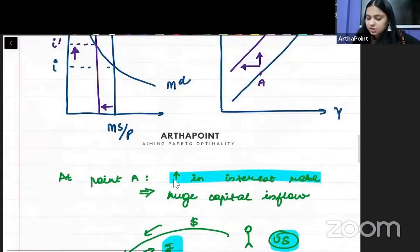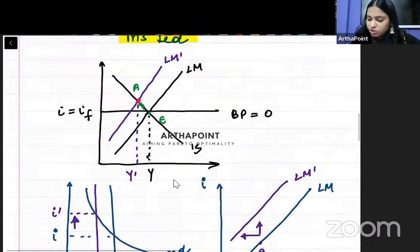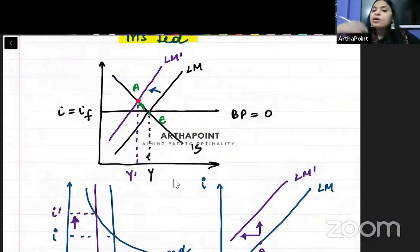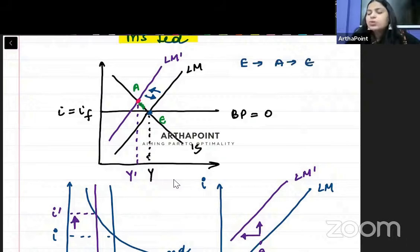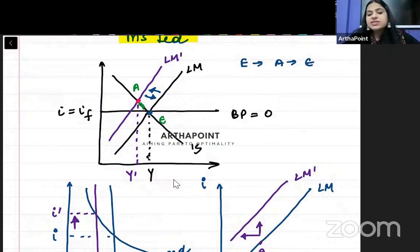When we increase the money supply, the LM curve will shift rightwards because the supply of money has increased. So the LM curve which had shifted backwards will shift right back, and we will move back to point E. So we start from E, go to A, and come back to E. The output has not changed — we are back at position number 1. That is why we say that the monetary policy is ineffective.